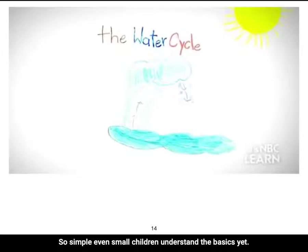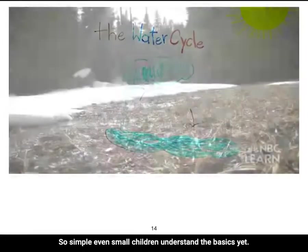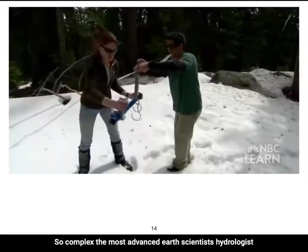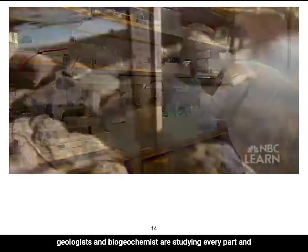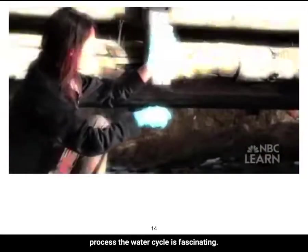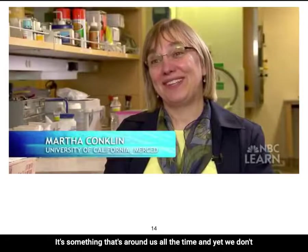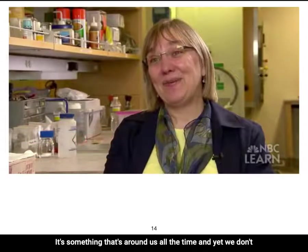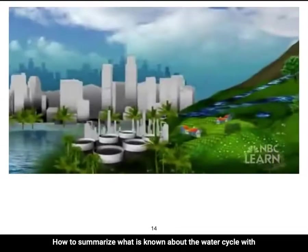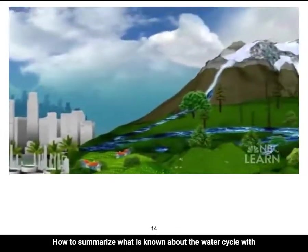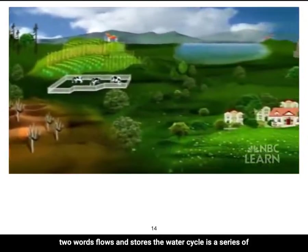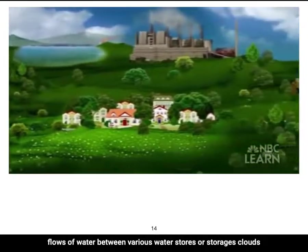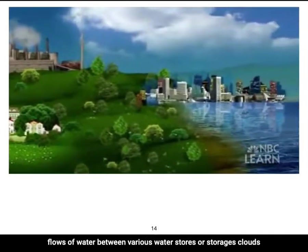The water cycle is so simple that even small children understand the basics, yet so complex that the most advanced Earth scientists — hydrologists, geologists, and biogeochemists — are studying every part and process. How to summarize what is known about the water cycle? With two words: flows and stores. The water cycle is a series of flows of water between various water stores or storages.